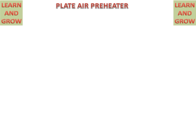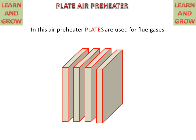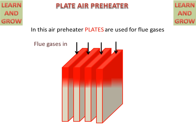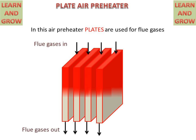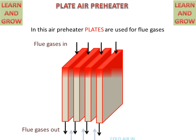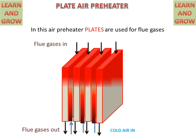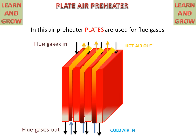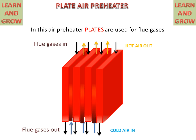In plate type air pre-heater, plates are used for flowing flue gases and air. There are closely spaced plates. Flue gases will be entered in these plates, the plates will get heat from the flue gases and go outside. Cold air will be entered from the space between the plates and hot air we will get on the other side. This is the basic principle of plate type air pre-heater.